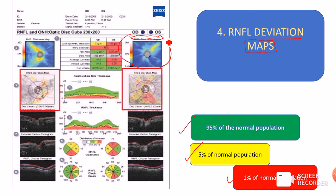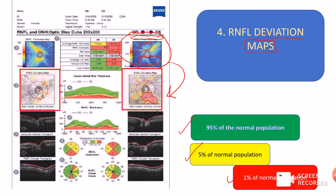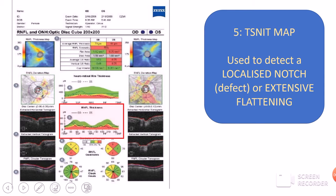It is important to note that the color coding of the RNFL thickness map is the opposite of the deviation map. In the RNFL thickness map, red indicates good thickness. In this diagram, the RNFL thickness is represented in blue, indicating thinning, and inferiorly there is no redness — it is entirely blue. The same finding is seen in the RNFL deviation map, where a large red area indicates a defect — deviation present in only 1% of the normal population, meaning it is dangerous.